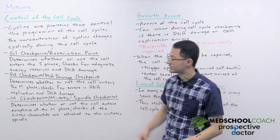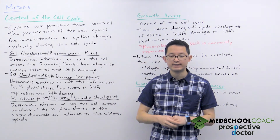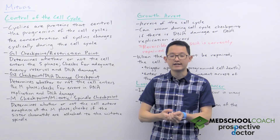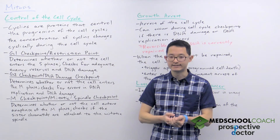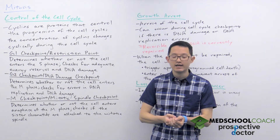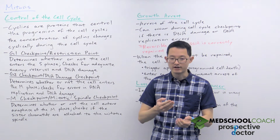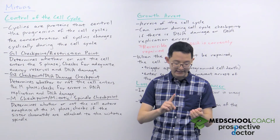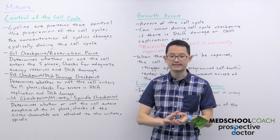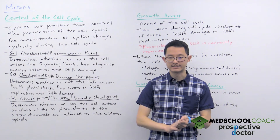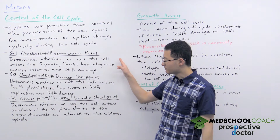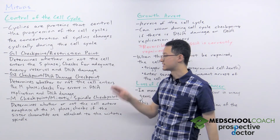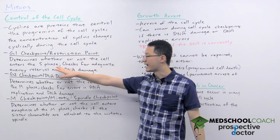The G1 checkpoint is also called the restriction point. This is essentially the point where the cell decides whether or not to commit itself to cell division, because once the cell passes this step it's going to undergo DNA synthesis and then mitosis and cytokinesis. So this checkpoint is determining whether or not the cell is going to proceed into the S phase.